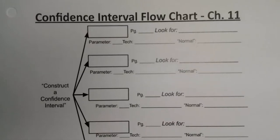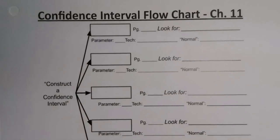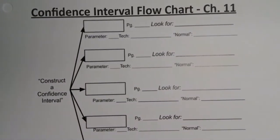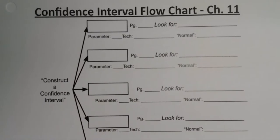As we head towards the final exam, it's time to put all the different confidence intervals we've learned together into one big chart. We have learned five different confidence intervals — two from chapter nine and three more from chapter eleven — so now we need to figure out how to tell which one is being asked for.